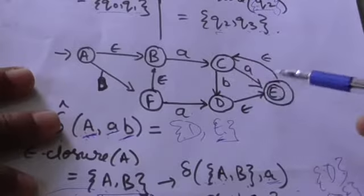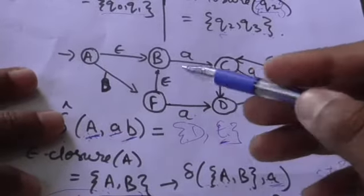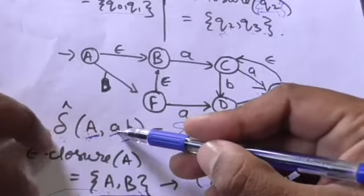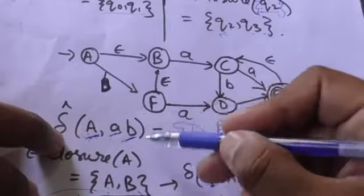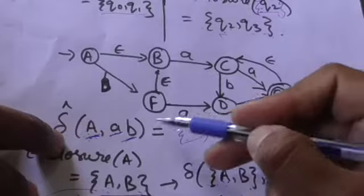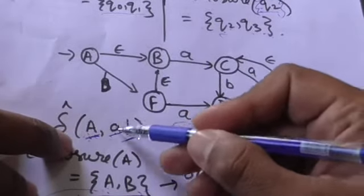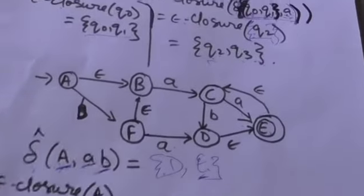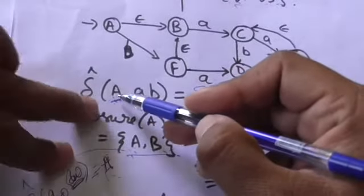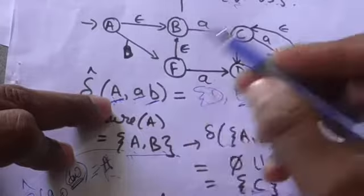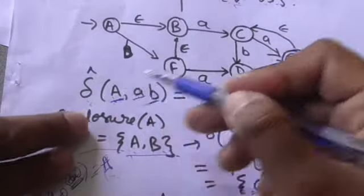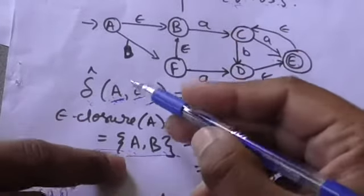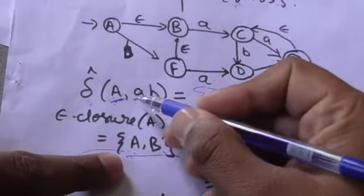Suppose this is an NFA with empty transitions. The present state is a, and we apply a string of input symbols 'ab'. We need to find the set of possible states in which this NFA can be after reading 'ab' from state a. For this we find the output of the extended transition function for state a and string 'ab'. First, find ε-closure(a).